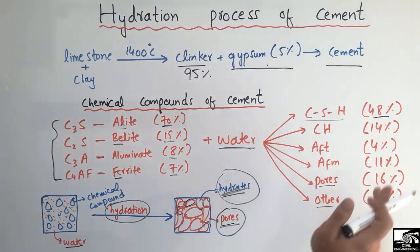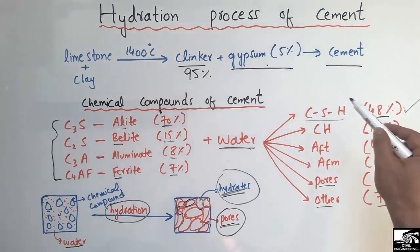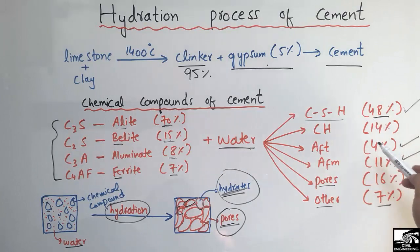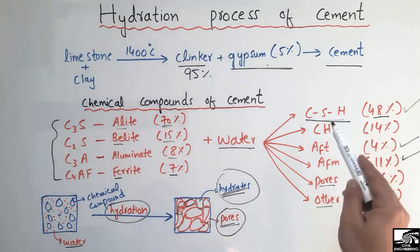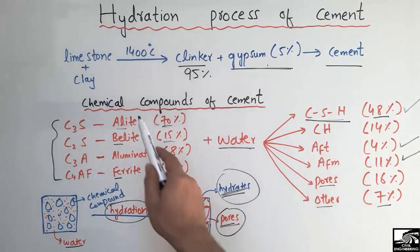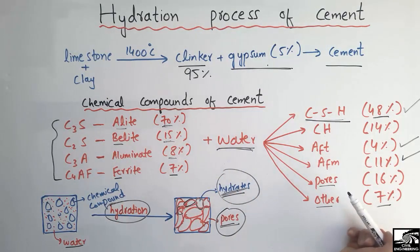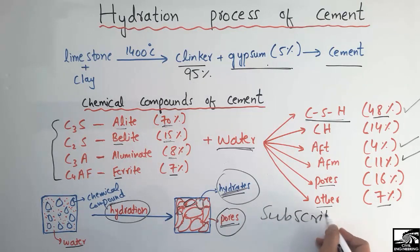These hydrates are responsible for strength, but the most important for strength is CSH — the more CSH present, the greater the strength of the cement. AFt and AFm are not contributing to strength as much as calcium silicate hydrate. This is the whole hydration process of cement: chemical compounds react with water forming hydrates responsible for the strength of cement and concrete. Hope you understand, and don't forget to subscribe for more interesting videos — thank you for watching.